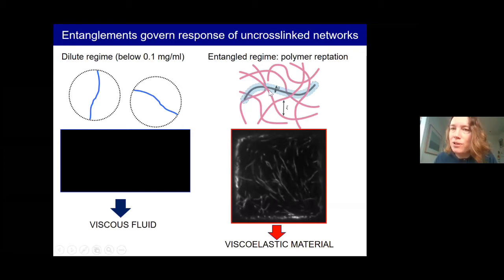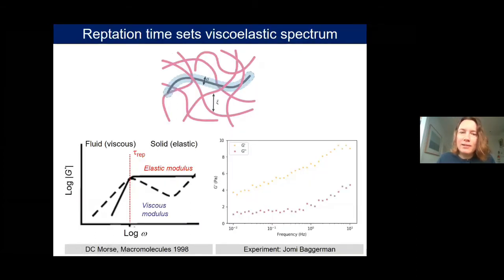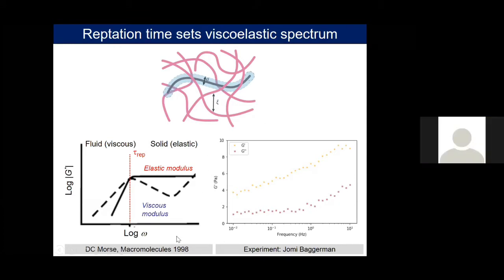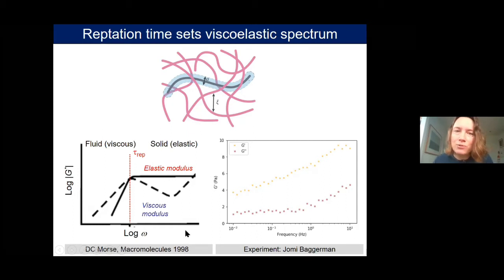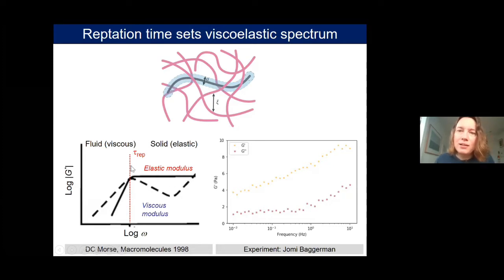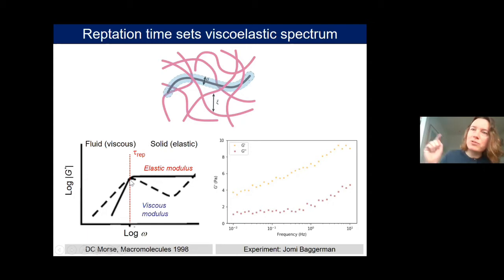In the entangled regime, viscoelastic behavior was famously modeled by David Morse in 1998. The prediction is that at high frequency the material is primarily elastic, but at a characteristic frequency — the inverse of the reptation time — the material can relax stress as polymers escape the tubes, and you see viscous behavior. Experimentally, we are really in the high-frequency regime because actin filaments are quite long, with reptation times of minutes to hours depending on filament length.